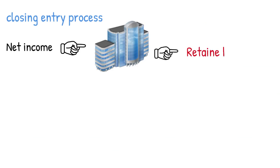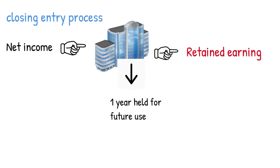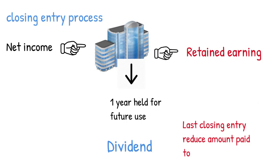As part of the closing entry process, the net income earned by the company is moved into retained earnings on the balance sheet. The assumption is that all income from the company in one year is held on to for future use. Any funds that are not held on to incur an expense that reduces net income. One such expense determined at the end of the year is dividends. The last closing entry reduces the amount retained by the amount paid out to investors.